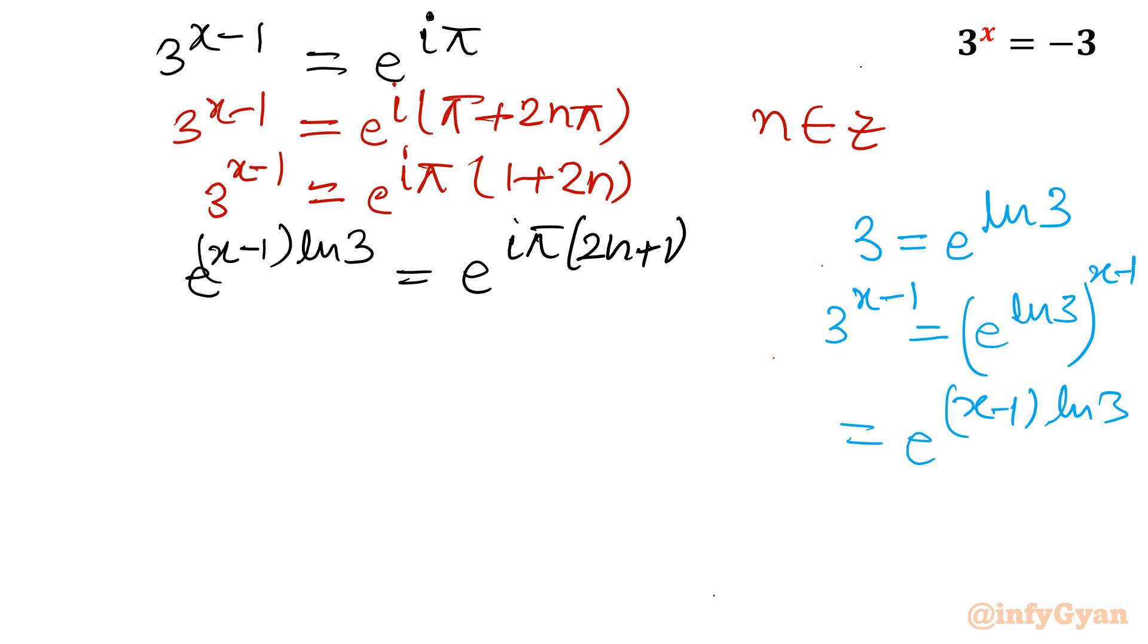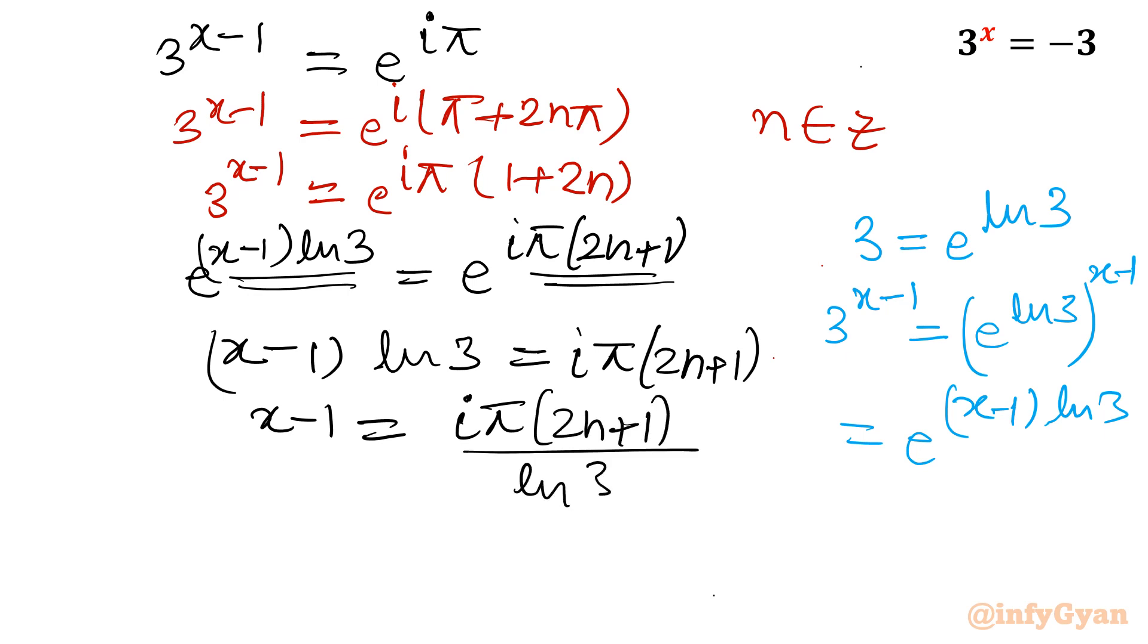Because our base both sides are same, exponent must be same. I will write x minus 1 ln 3 - this term should be equal to this: x minus 1 ln 3 equal to i pi times 2n plus 1. So x minus 1 - divide both sides by ln 3: i pi times 2n plus 1 over ln 3.